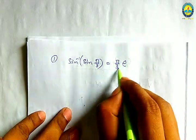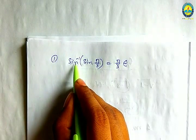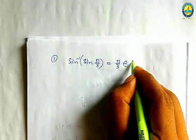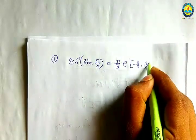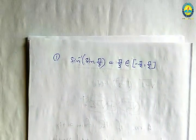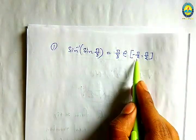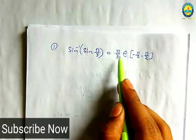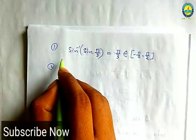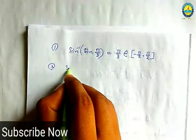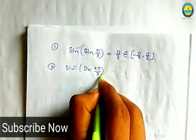Sin inverse, principal value branch: minus pi by 3. This is the same value. Sin inverse sin(pi by 3).